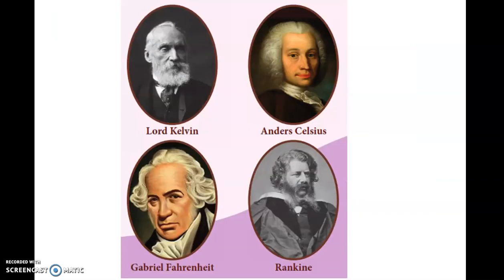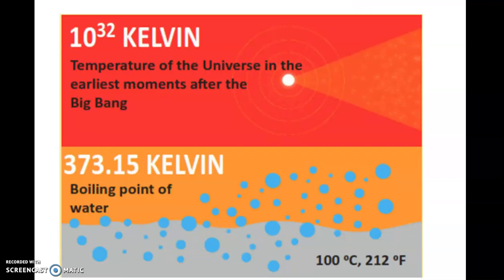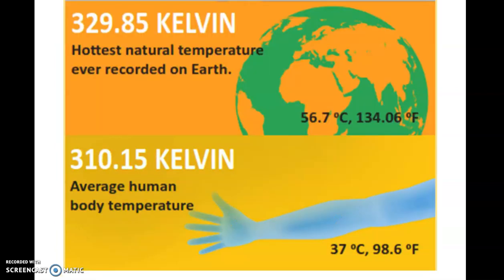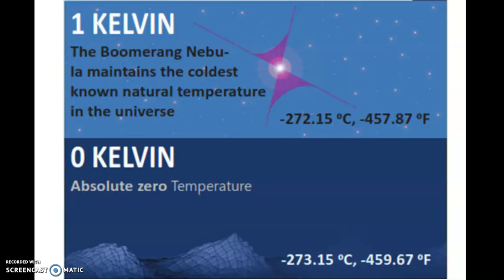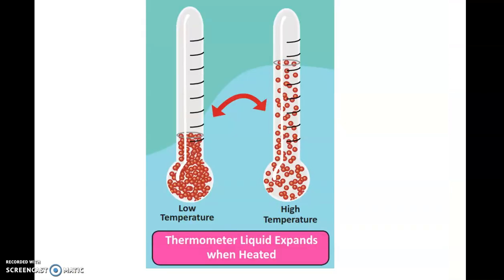Some known temperature facts: the temperature of the universe in the earliest moment after the Big Bang is 10 to the power of 32 Kelvin. 373 Kelvin is the boiling point of water. 329 Kelvin is the hottest natural temperature ever recorded on Earth. 310 Kelvin is the average human body temperature. 273 Kelvin is the freezing point of water. 178 Kelvin is the coldest natural temperature ever recorded on Earth. 1 Kelvin — the Boomerang Nebula maintains the coldest known natural temperature in the universe. Zero Kelvin is absolute zero temperature.